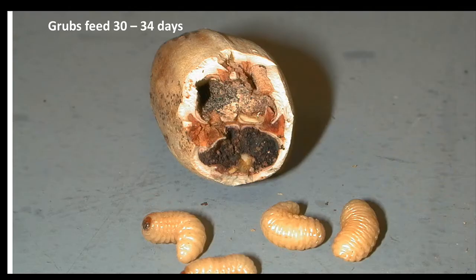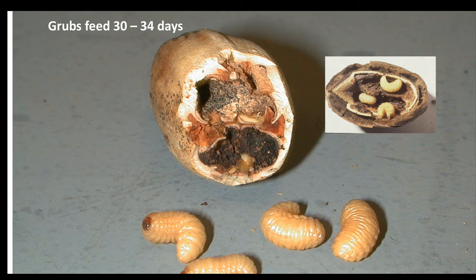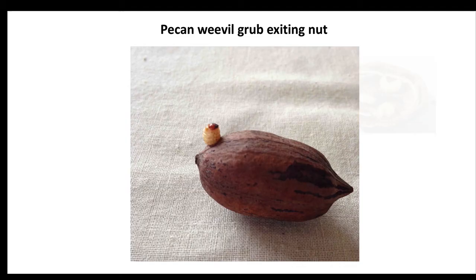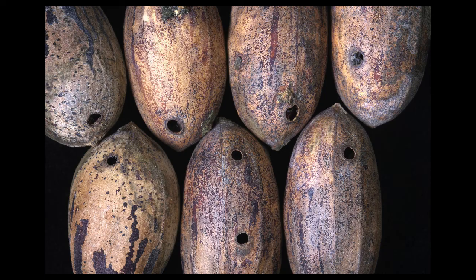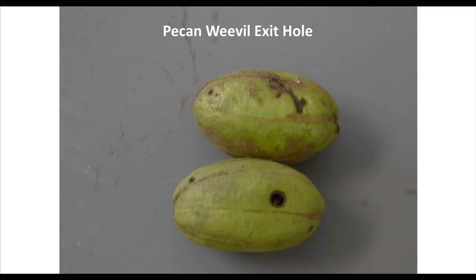The grubs will feed within the nut, feeding on the kernel, for about 30 to 34 days. Upon completion of feeding, the larvae will cut a hole through the shell and emerge through a single nice round BB-size hole — usually one hole per pecan, but on occasion there can be two. These are exit holes where grubs have already left. Emergence can also occur if the shuck is still attached, as shown here, when they go through the shuck.